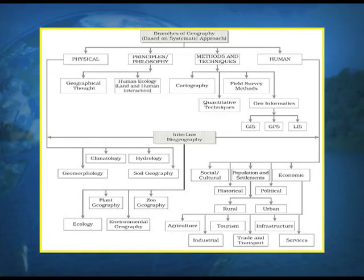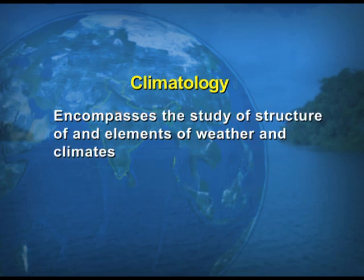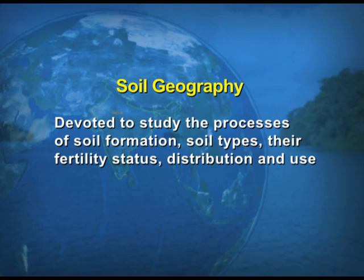Coming back to this diagram, the branches of geography based on the systematic approach under physical geography include: geomorphology, climatology, hydrology, and soil geography.